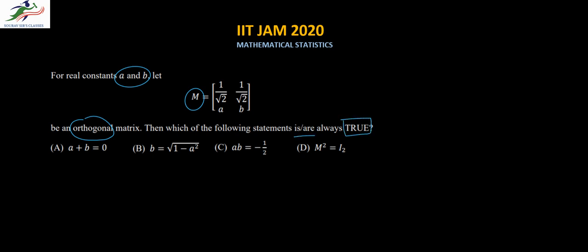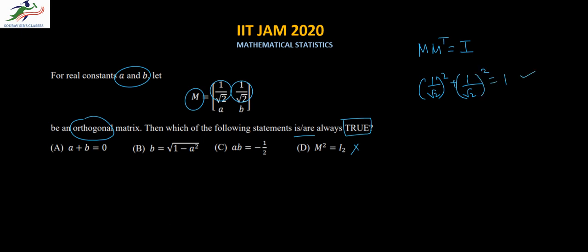For an orthogonal matrix we know that the matrix itself multiplied by its transpose is equal to the identity matrix. So straight away option D is ruled out, as M squared is not equal to the identity matrix. The sum of the squares of the first row should equal 1, which means (1/√2)² + (1/√2)² = 1, which is correct in this case.